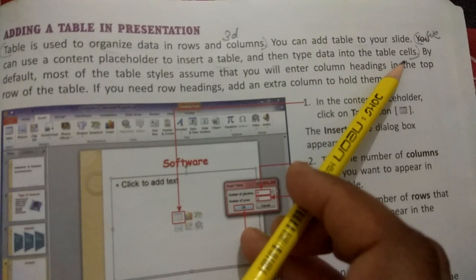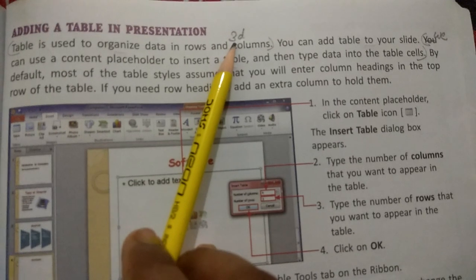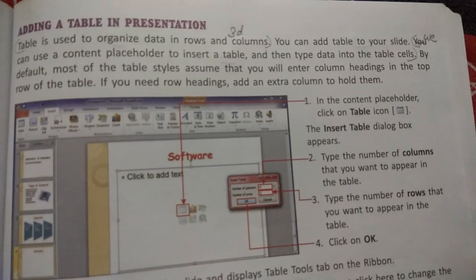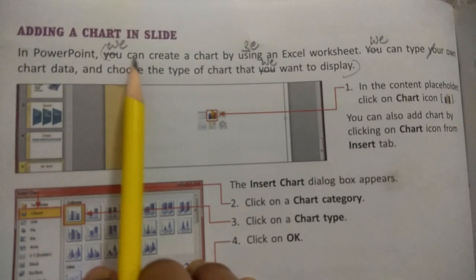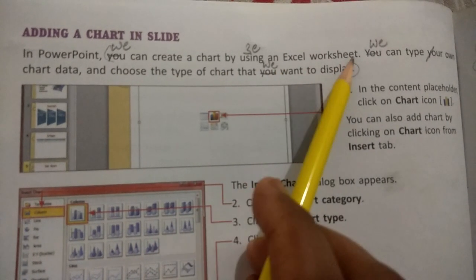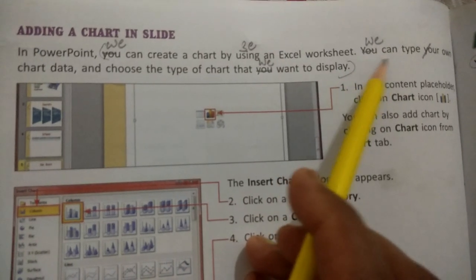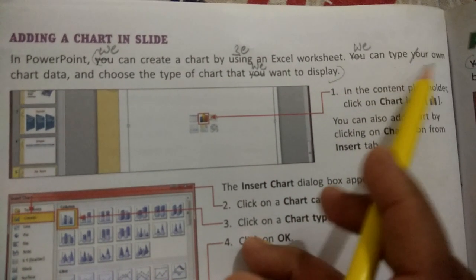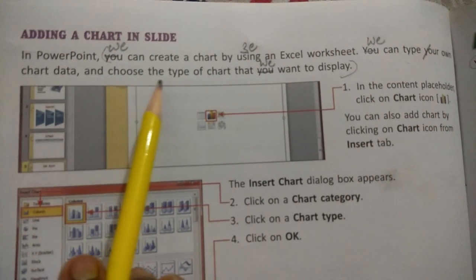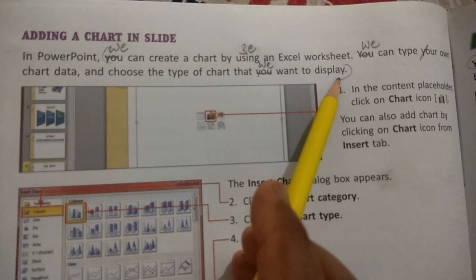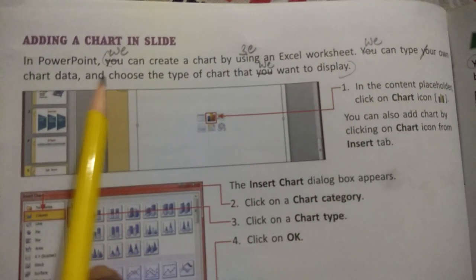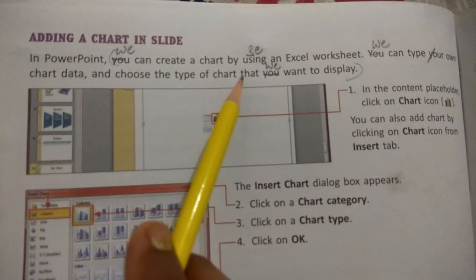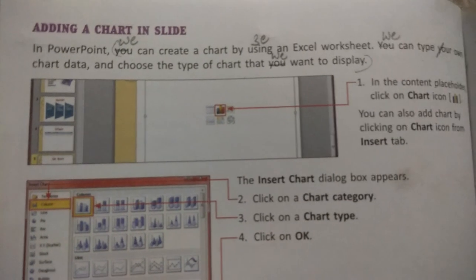For answer number E, take out page number 64. Cut 'you' and write 'we'. We can create a chart by using an Excel worksheet, so we can type our own chart data and choose the type of chart that we want to display. So the answer is: we can create a chart by using an Excel worksheet, so we can type our own chart data and choose the type of chart that we want to display. This is answer 3E.